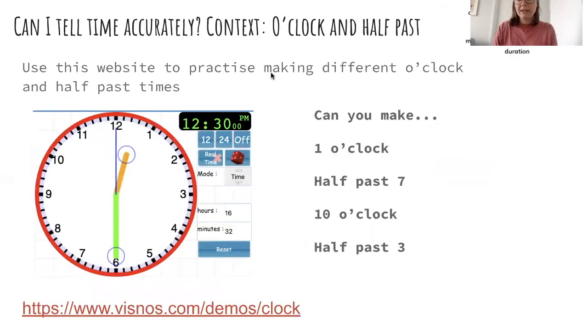So this website here is what I was using to make these nice pictures. Use this website to practice making different o'clock and half past times. You can move the hands on the clock and you can make different times. Here you can also see the digital time. So this ties in quite nicely with our work on scales.